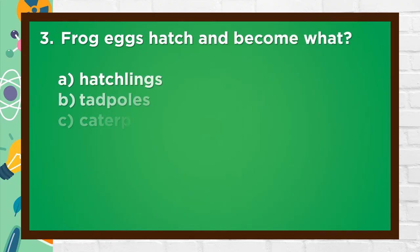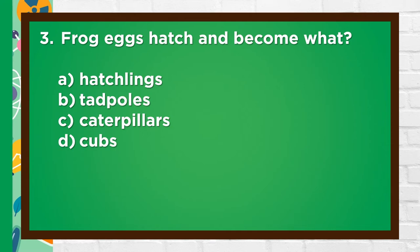Number 3. Frog eggs hatch and become what? A. Hatchlings, B. Tadpoles, C. Caterpillars, D. Cubs. The answer is B. Tadpoles